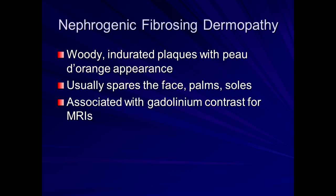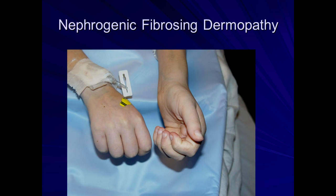With nephrogenic fibrosing dermopathy, there's thickening too. It usually spares the face, palms, and soles, but can be very severe. They get this woody induration and thickening of the skin, sometimes hard to appreciate. Sparing palms and soles, they can have difficulty with contracture.